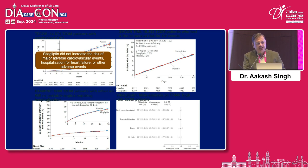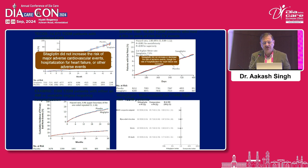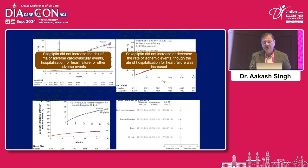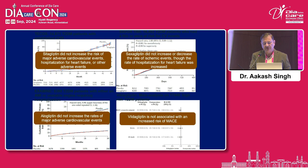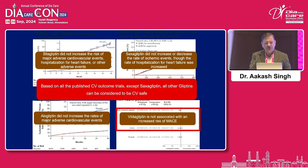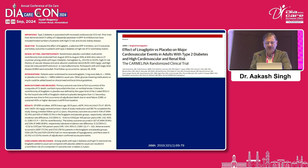Sitagliptin did not increase the risk of major adverse cardiovascular events, hospitalization for heart failure, or other adverse events. Sitagliptin did not increase or decrease the rate of ischemic events. Alogliptin did not increase the rates of major adverse cardiovascular events. Vildagliptin was not associated with an increased risk of MACE. Based on all published CV-OT outcome trials, except saxagliptin, all the other gliptins can be considered CV-safe.